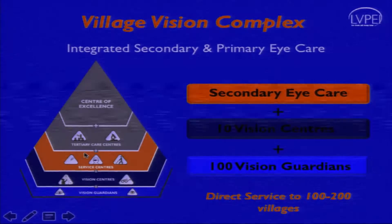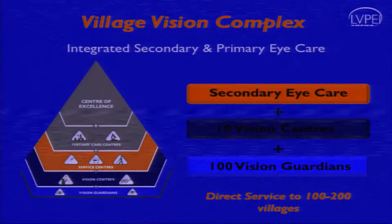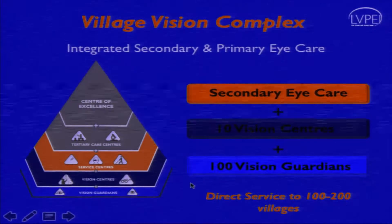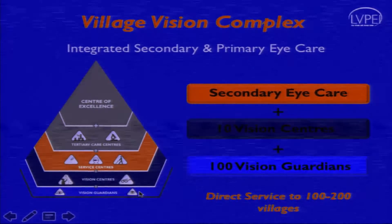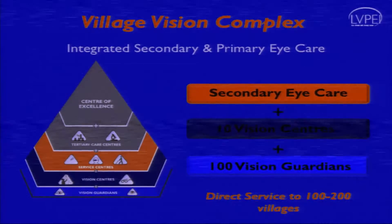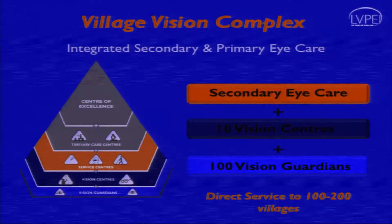It is more like a district model in a government setting, where half a million to one million population is covered. Vision centers are equivalent to a primary health center where refraction units are kept, and vision guardians are like community health workers or ASHA workers in the government system. So this is what we call the village vision complex: one secondary center, 10 vision centers, and 100 vision guardians.